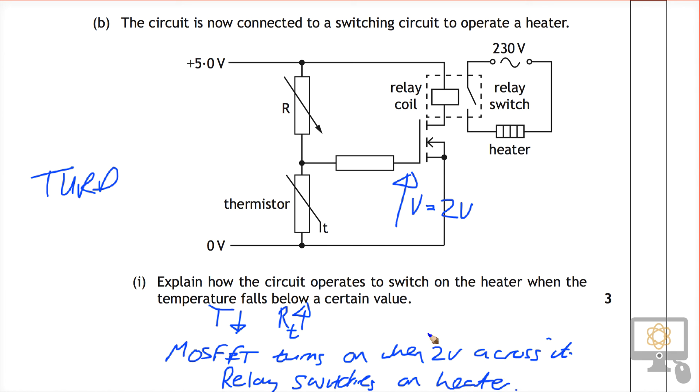Okay, so just to summarize then, the temperature goes down, the resistance of the thermistor will go up, one mark. That turns on the MOSFET, because the voltage across the thermistor has now risen. And that allows current to flow through the relay coil, which means that the relay switches on the heater. So one mark, two marks, three marks.